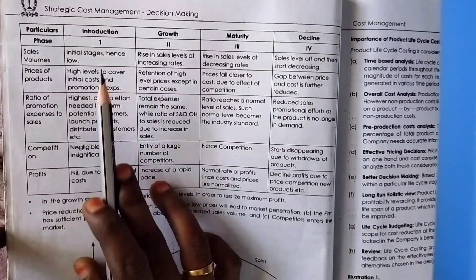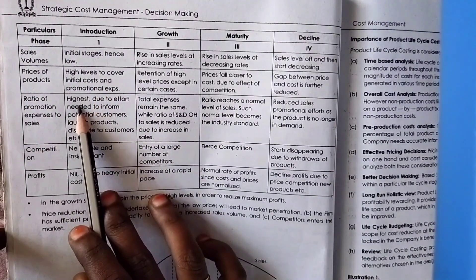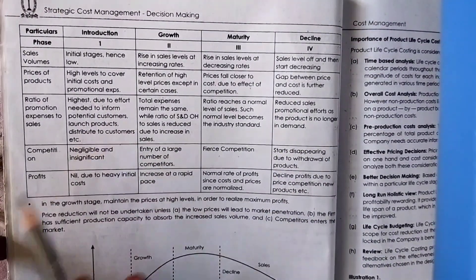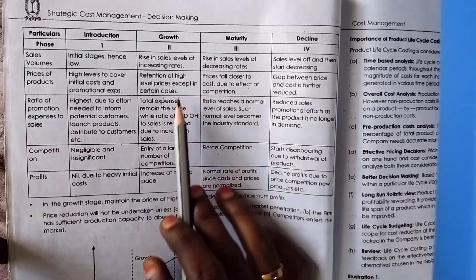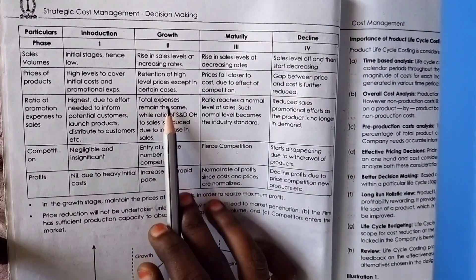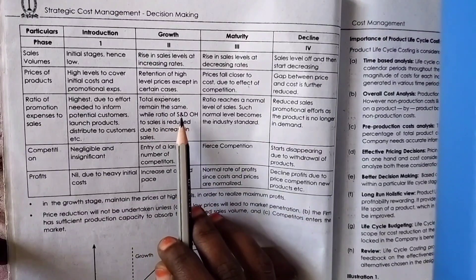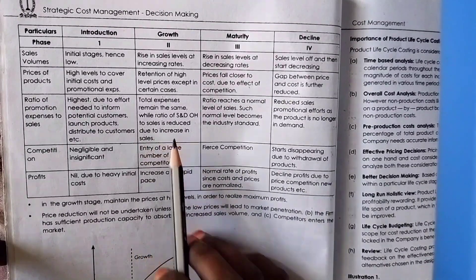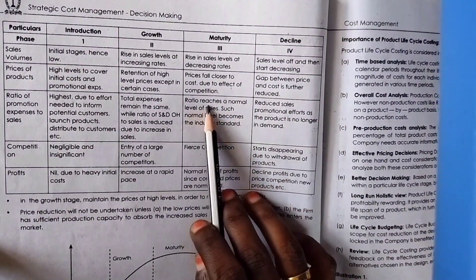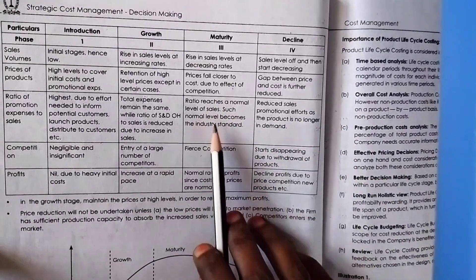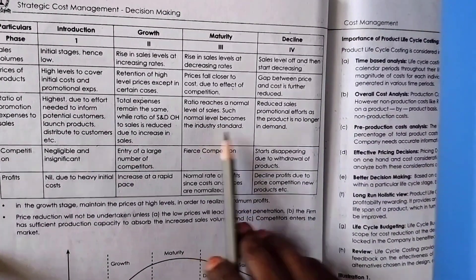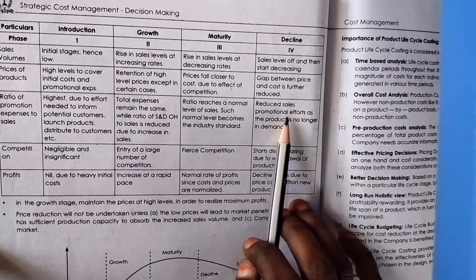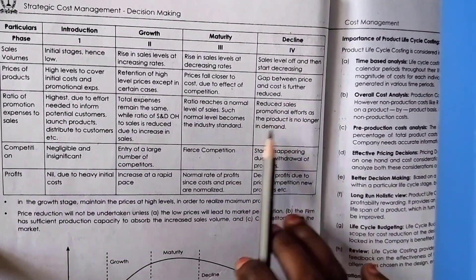Ratio of promotion expenses to sales: this is highest in the Introduction stage, due to the effort needed to inform potential customers, launch products, and distribute to customers. In the Growth stage, total expenses remain the same but the ratio of expenses to sales is reduced due to increasing sales. In Maturity, the ratio reaches a normal level of sales which becomes the industry standard. In Decline, reduced sales prompt reduced promotional efforts as the product is no longer prioritized.